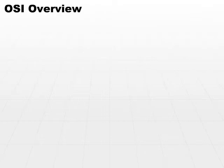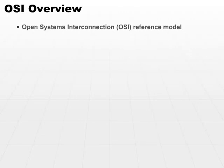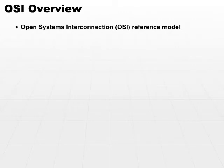Let's take a look at the reference model. The OSI reference model is the Open Systems Interconnection Reference Model. It is the model of communication for dissimilar machines that we base most of our networking protocols on today.